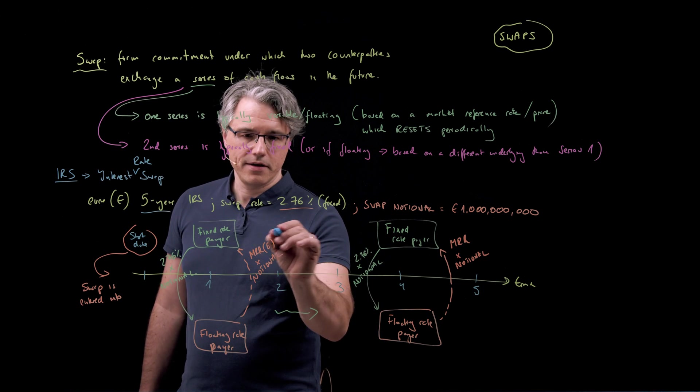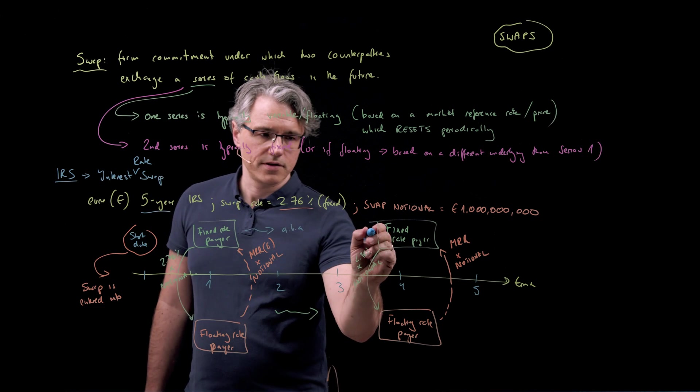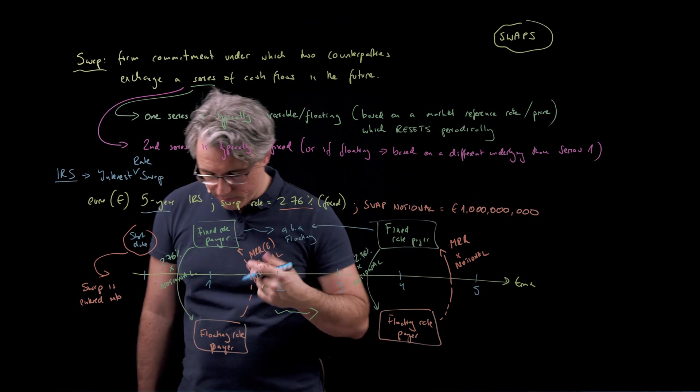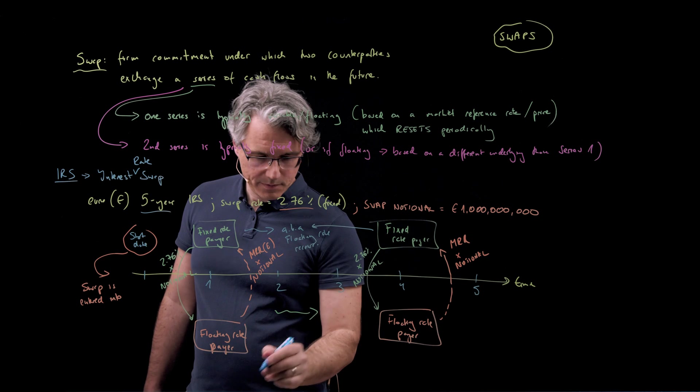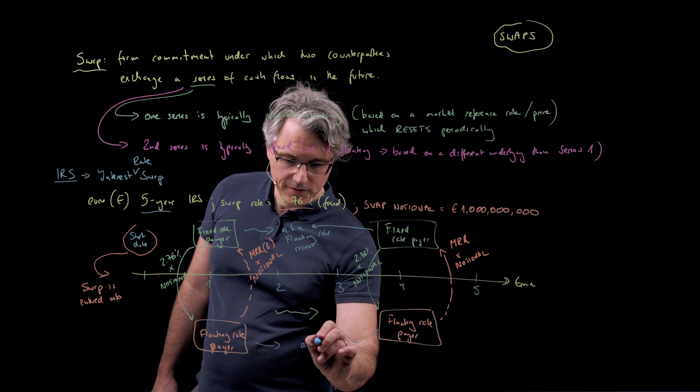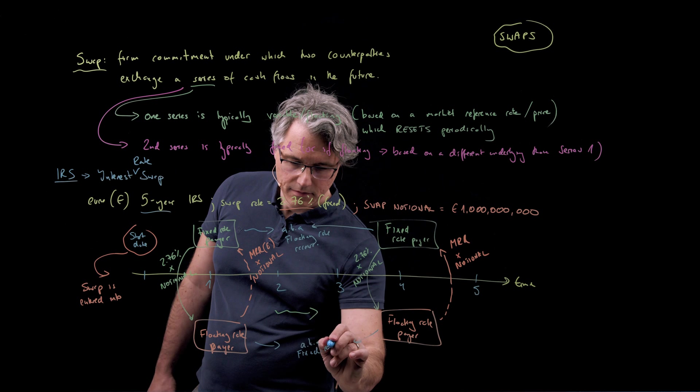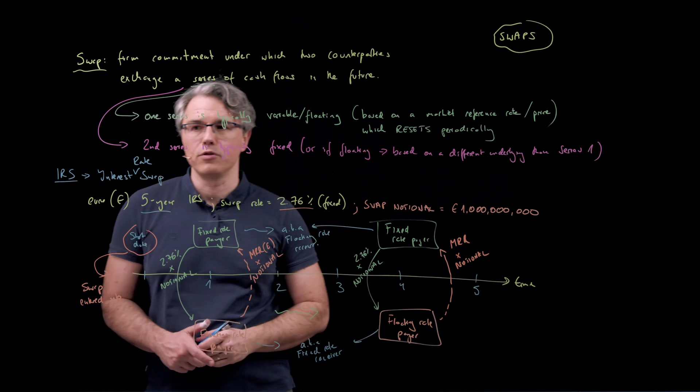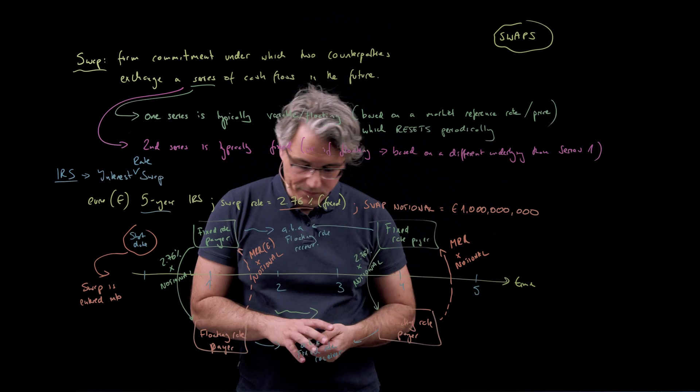Now, this fixed rate payer can also be known as and referred to as the floating or variable rate receiver, whereas this person down here can also be referred to as or is also known as the fixed rate receiver. So you can describe them in terms of what they pay or just as well what they receive and the other side pays.